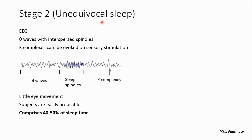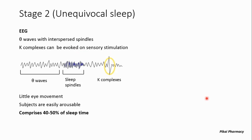Stage 2 is also called equivocal sleep. In this stage the EEG shows theta waves with interspersed sleep spindles, and K-complexes can be evoked on sensory stimulation, as seen in the graph. Eye movements are very little and the subjects are easily arousable — meaning we can easily wake the sleeping person — which relates to the fact that K-complexes can be evoked on sensory stimulation.